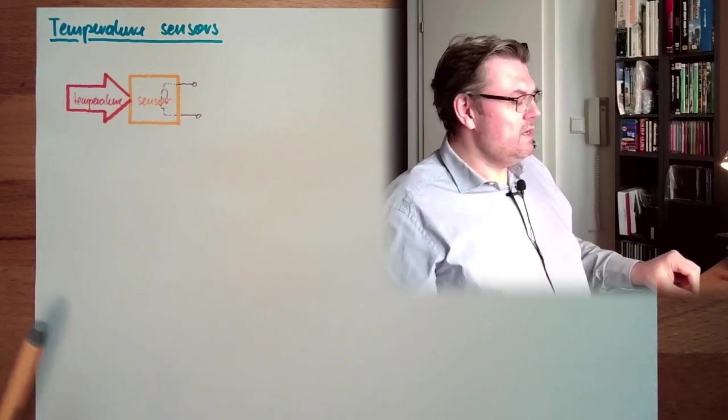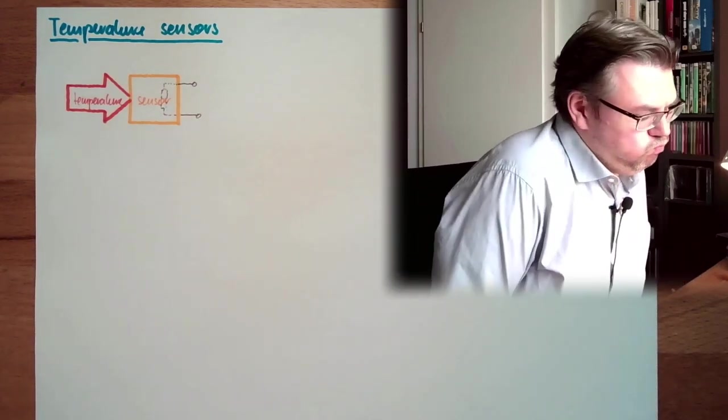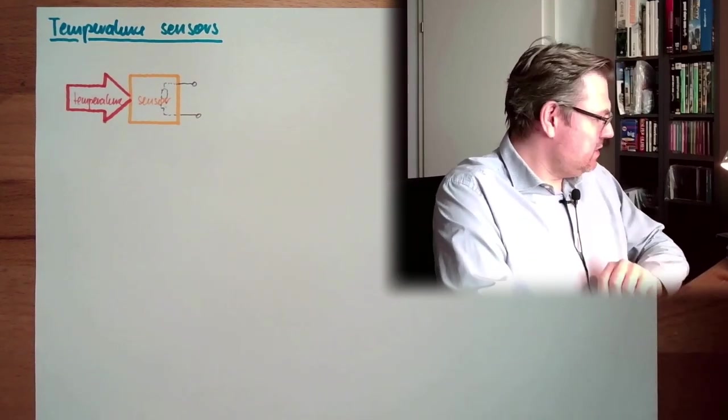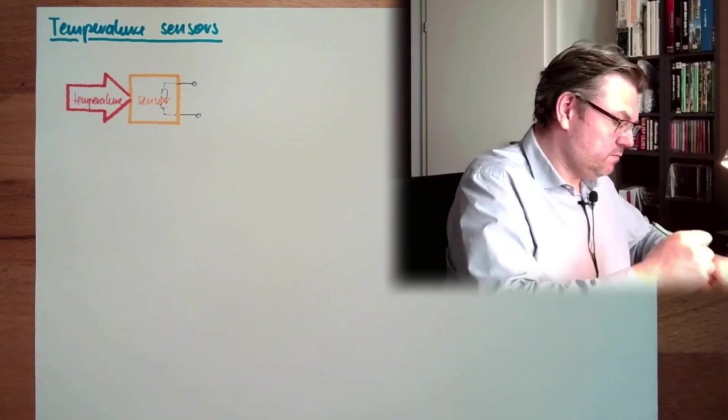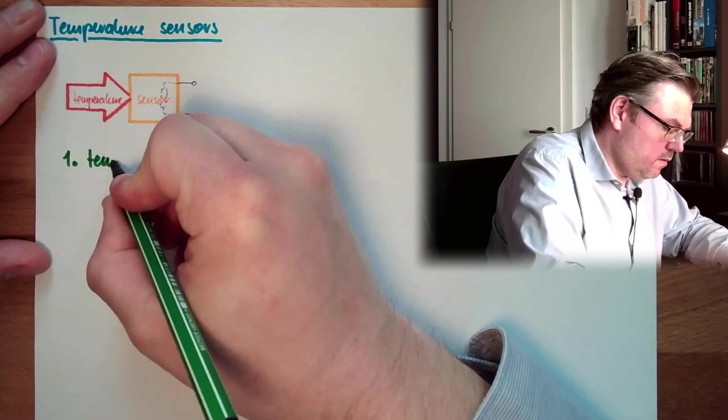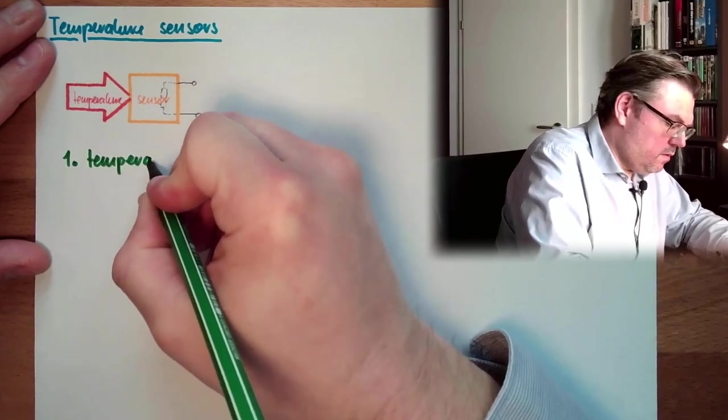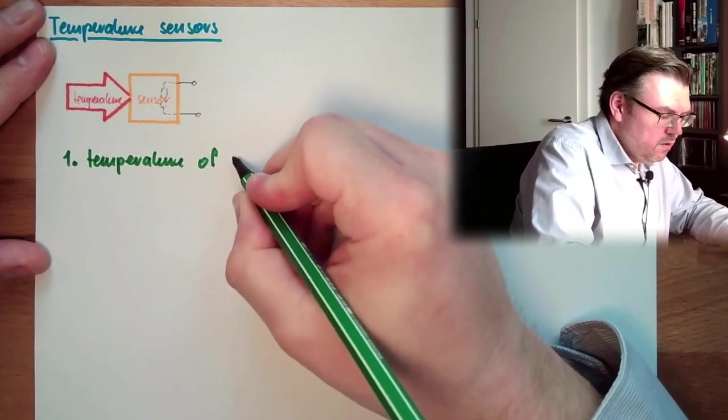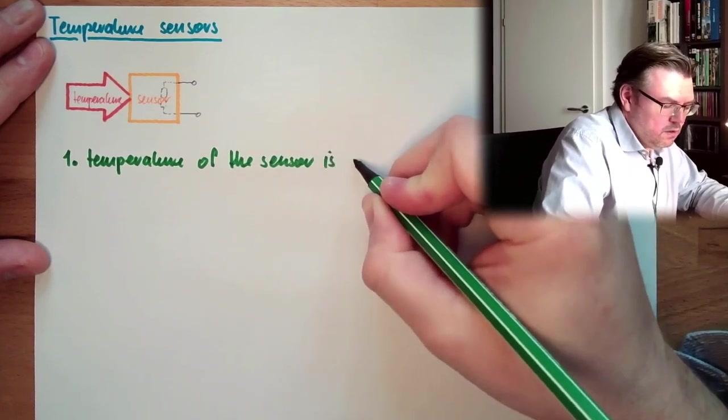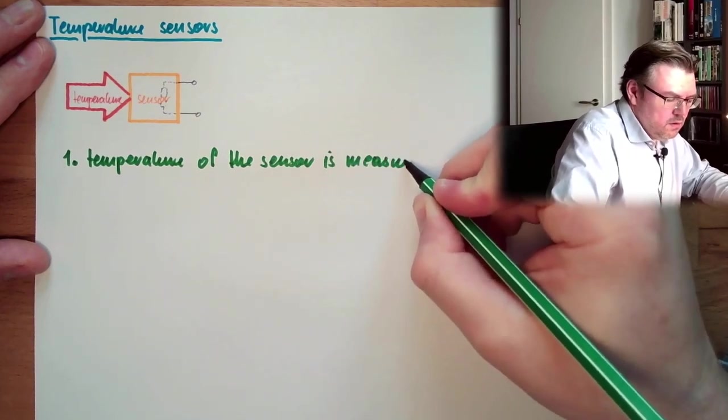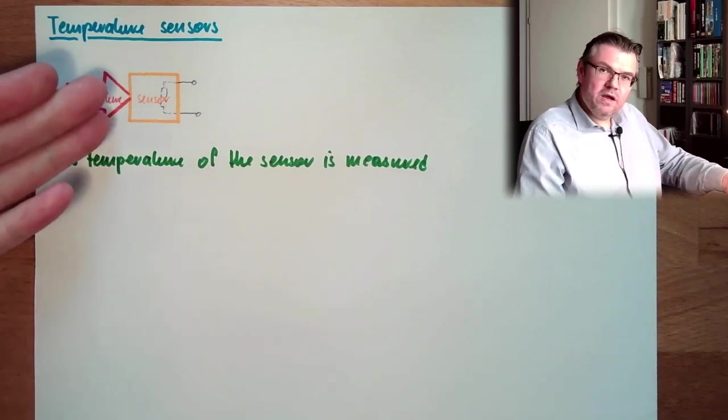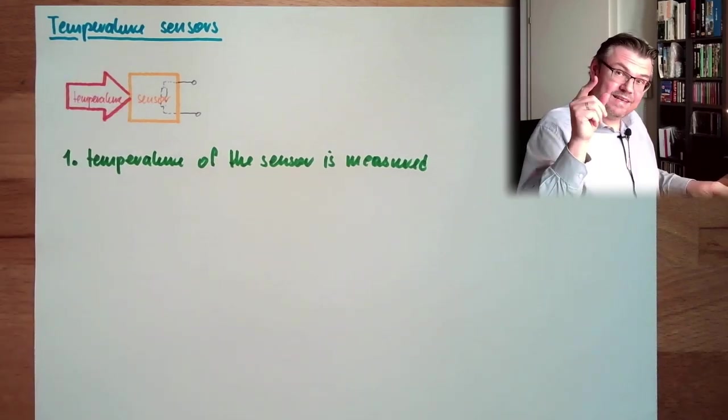We have to consider that this sensor has some sort of internal resistance. Why I'm telling you this? Because we have here some influences. First, first condition: the temperature of the sensor is measured. Okay? So I'm not really measuring the temperature, I'm measuring the temperature of the sensor.